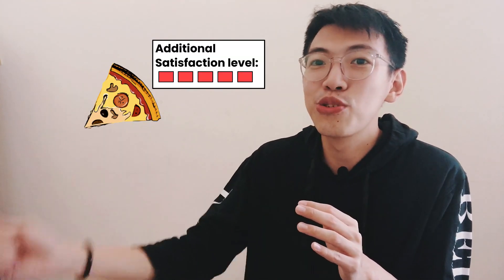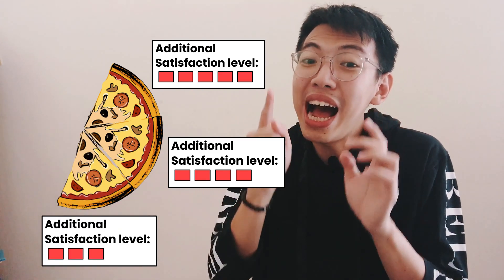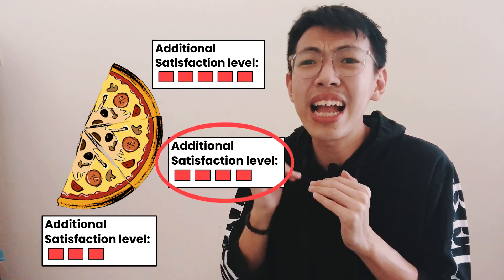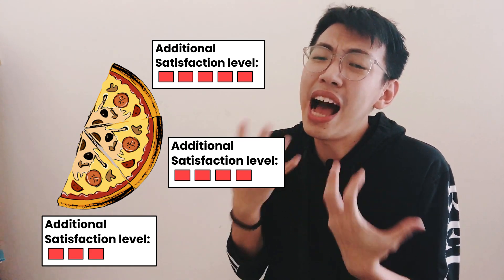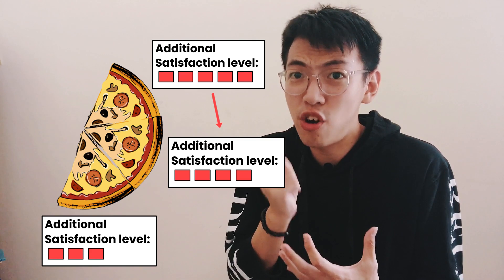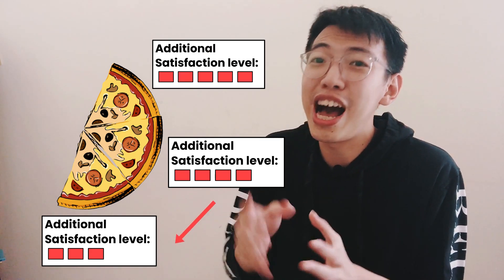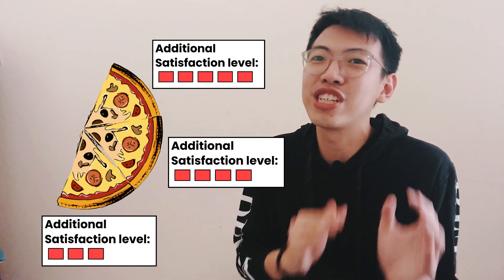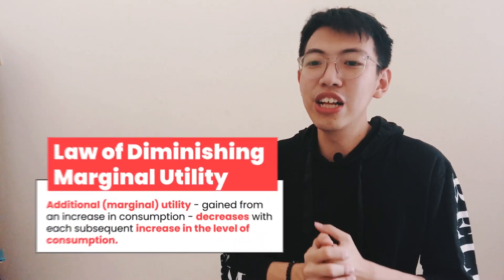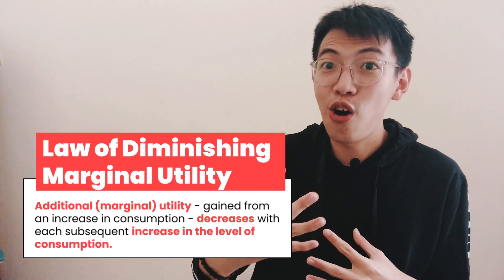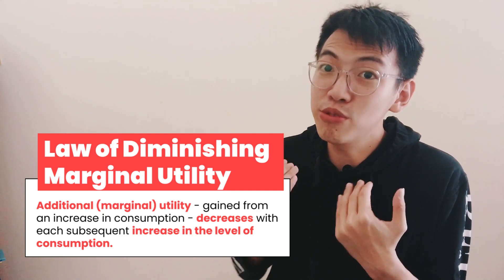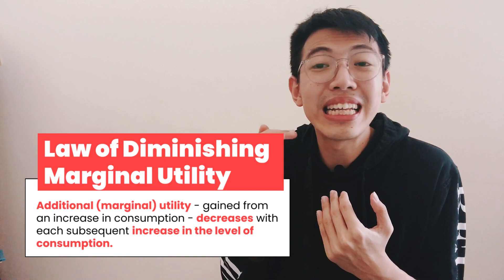Third is the law of diminishing marginal utility. Assume you really want to eat pizza — I offer you a pizza and you'll purchase it. But as you eat one slice, then two slices, three slices, and so on, your additional satisfaction level will decrease. When you eat the second slice, you have less additional satisfaction than from the first slice. When you eat the third slice, you have less than from the second, until you stop eating because there is no additional satisfaction anymore. This law states that the additional or marginal utility from an increase in consumption decreases with each subsequent increase in the level of consumption.